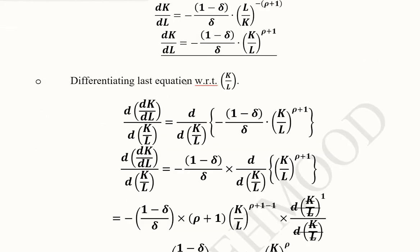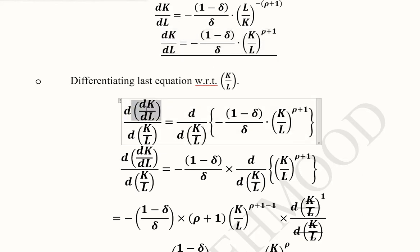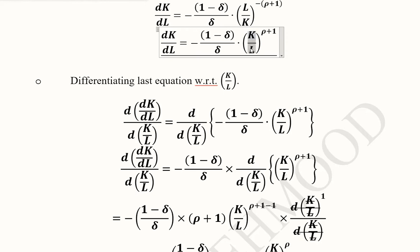Now we are going to differentiate this last expression with respect to K/L. It is a little notable that in the elasticity of substitution we are talking about substitution, which is relative between capital and labor, so capital alone is not used. Usually we use the ratio of the two factors of production because we are talking in relative terms. The last expression is here and we have differentiated it with respect to K/L, that is the capital-to-labor ratio. It is also suitable because in this expression we have the capital-to-labor ratio, so differentiating with respect to it is going to help us get meaningful results.